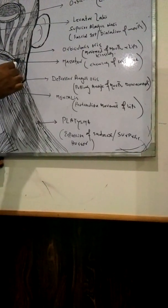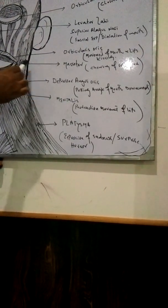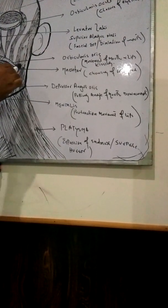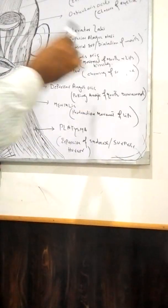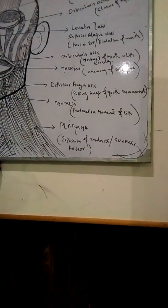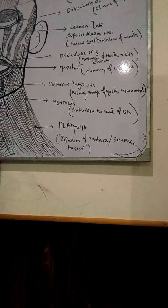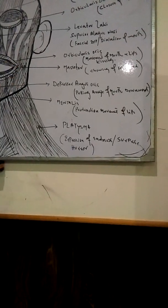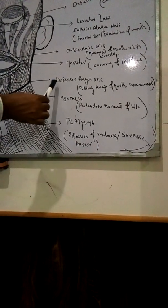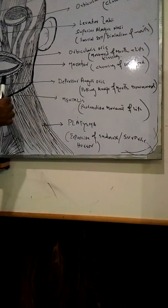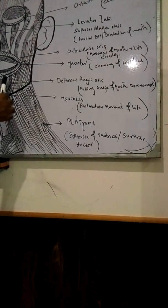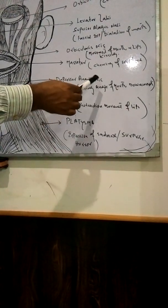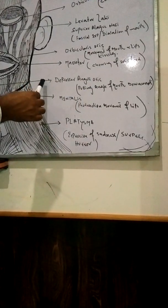The next muscle is called masseter. The masseter muscle is located in the cheeks and helps in chewing solid food. If someone chews solid food, this muscle definitely assists in that chewing action.